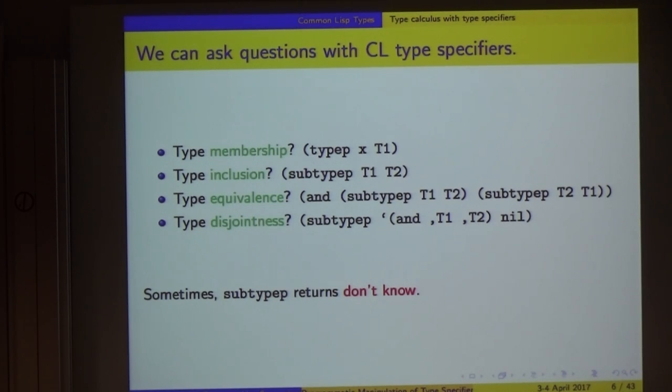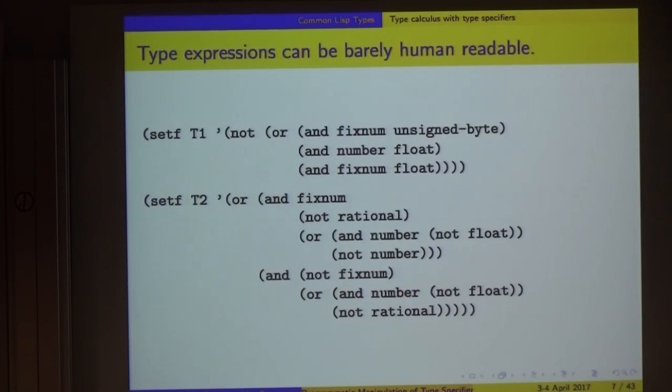Sometimes subtypeP, unfortunately, returns don't know rather than true or false. It might do this because some subtypeP questions are unanswerable - you would have to solve the halting problem to figure it out. But sometimes subtypeP returns don't know for a reason which is very good for the compiler generator but is infuriating to the application programmer such as myself. The standard allows subtypeP to give up if the question is too hard and just return don't know. A compliant implementation of subtypeP is not required to always answer the question when it's answerable.